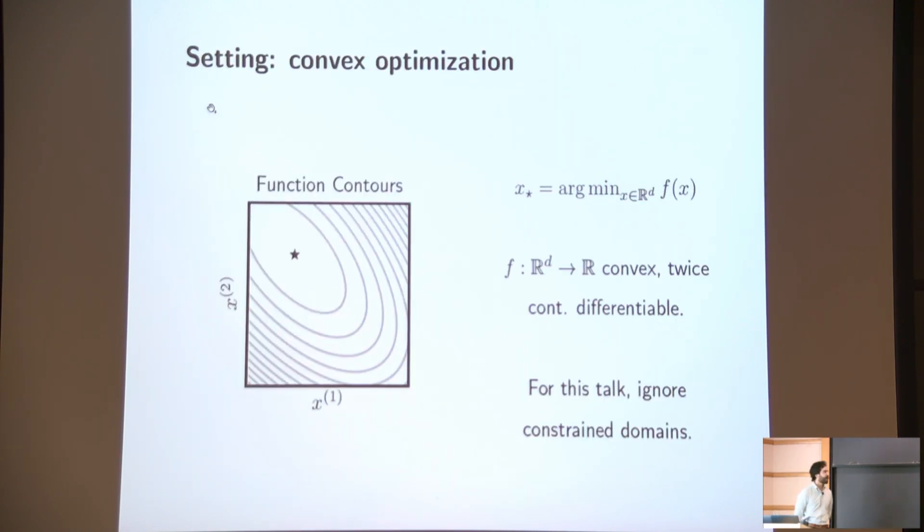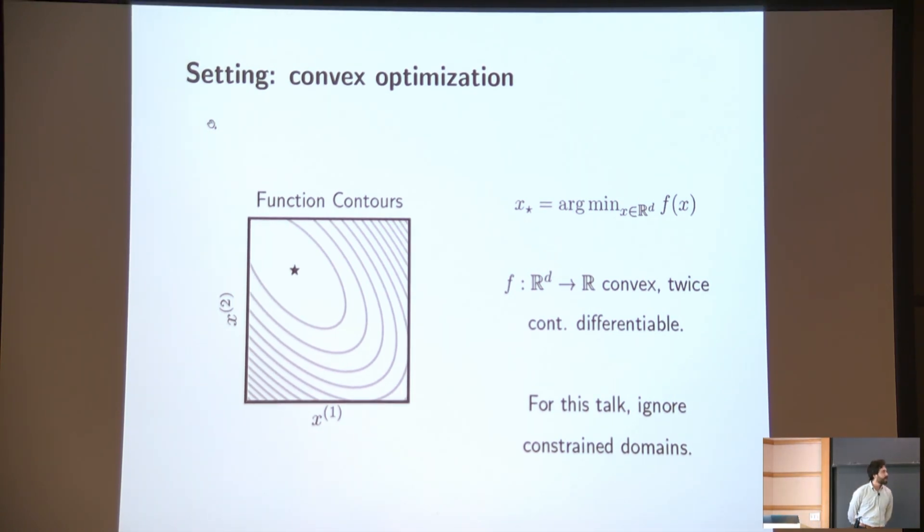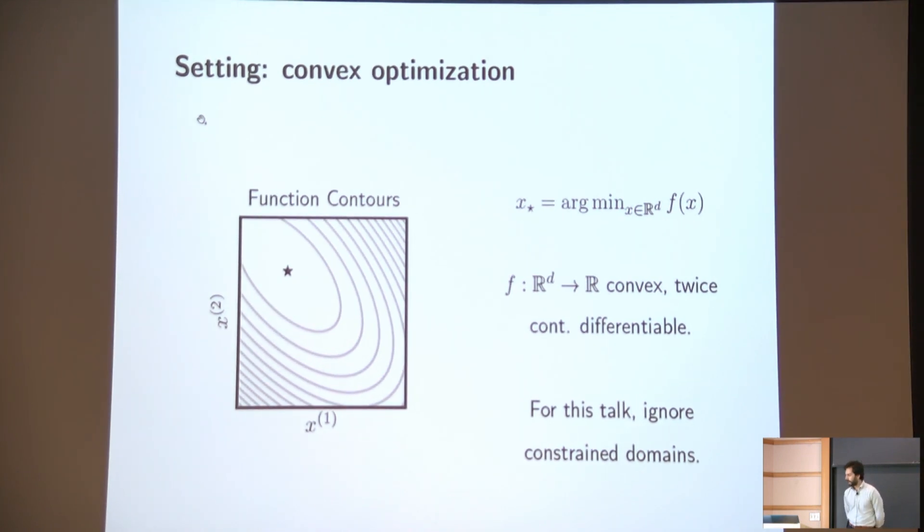So the setting that we're going to be considering is a pretty classical setting of convex optimization. We're going to assume that someone's given us some function f, which takes as arguments points in a finite dimensional real vector space, usually Euclidean. And our goal is going to be to find the minimizing argument x star.